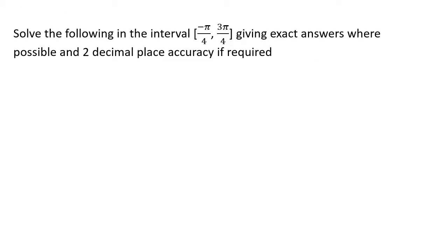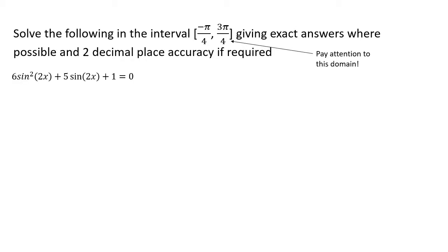Here's our last question. The interval is different from what we've had before — instead of 0 to 2 pi, we're looking at minus pi over 4 to 3 pi over 4. It's a shorter interval, about pi radians long. Also notice there is a double angle involved: 6 sine squared 2x plus 5 sine 2x plus 1 equals 0. That is going to change things — we need to understand how to adjust our final answer because it's sine squared 2x.